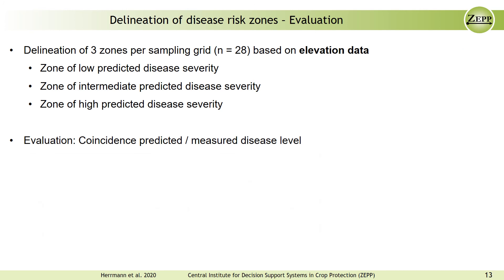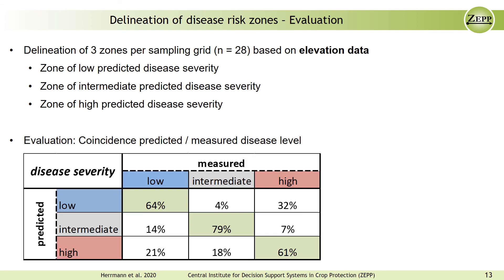Looking at the delineation results based on elevation data, the precision of the model is even a bit higher, spanning from 61 to 79% for the intermediate disease risk zone.